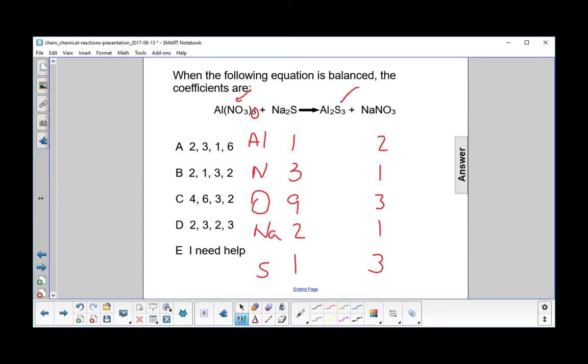Sulfur is all by herself right here, and there's three of them. So let's go ahead and multiply this by three. So we now have three sulfurs there. That's nice. And now we have six sodiums. So we have to put that there.